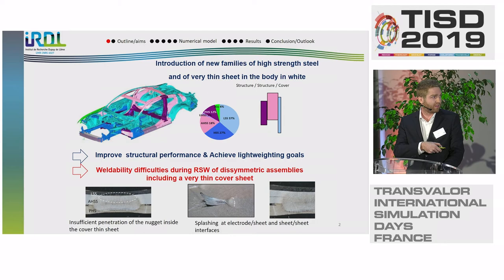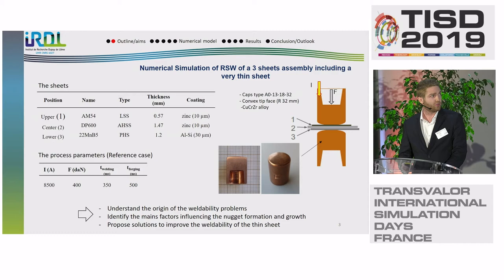As we can see there, we find mainly this kind of assembly. And thanks to the software Forge, we achieved the modeling and the numerical simulation of the RSW process of a three-sheet assembly including a very thin sheet. The assembly is composed of three sheets of different steels, with different thicknesses and different coatings, as you can see there.